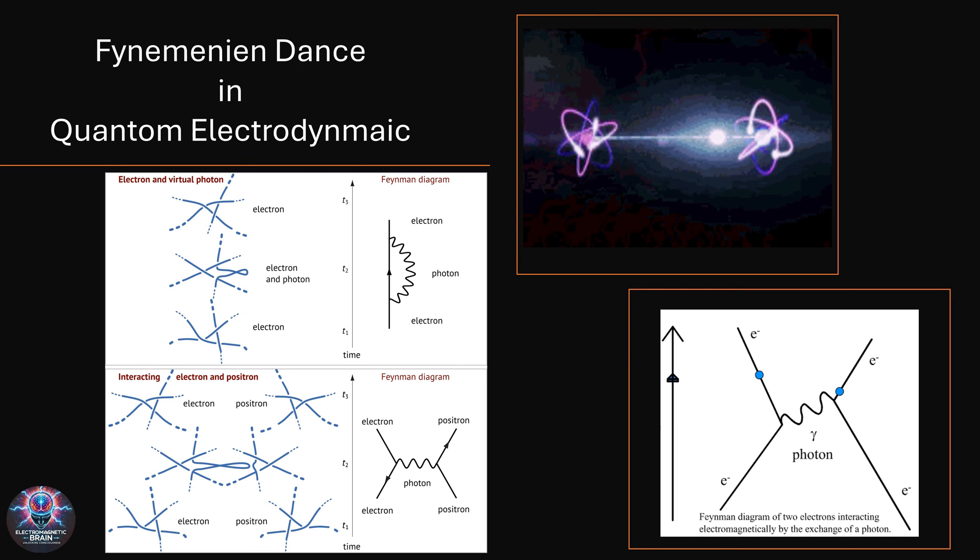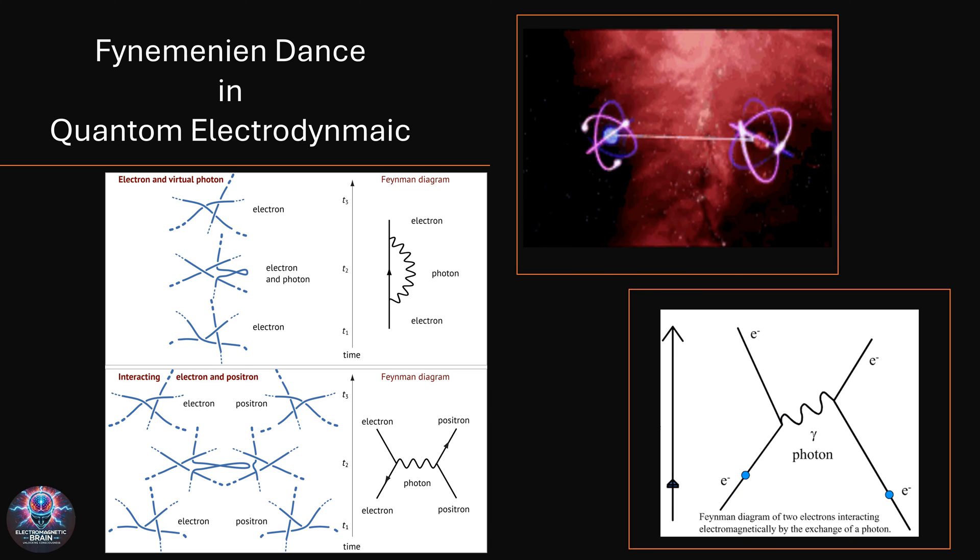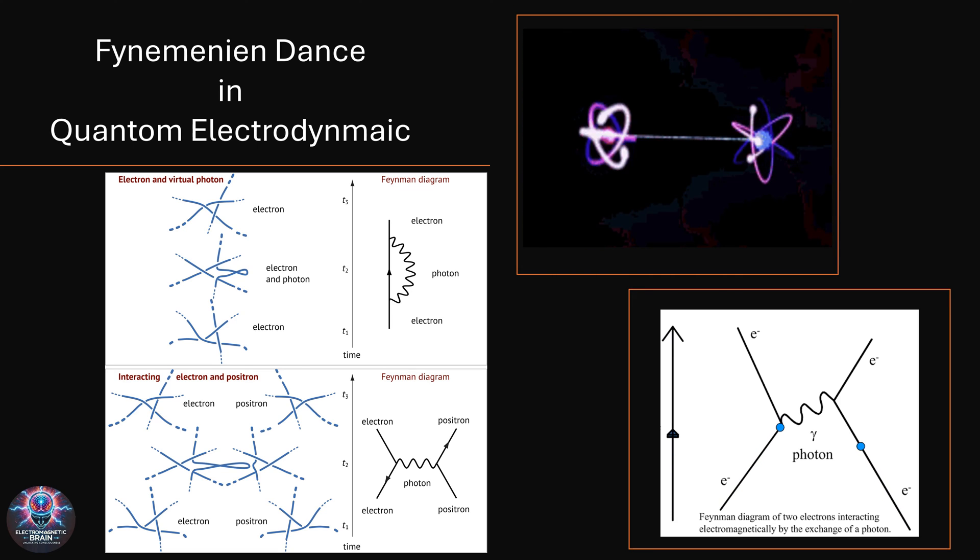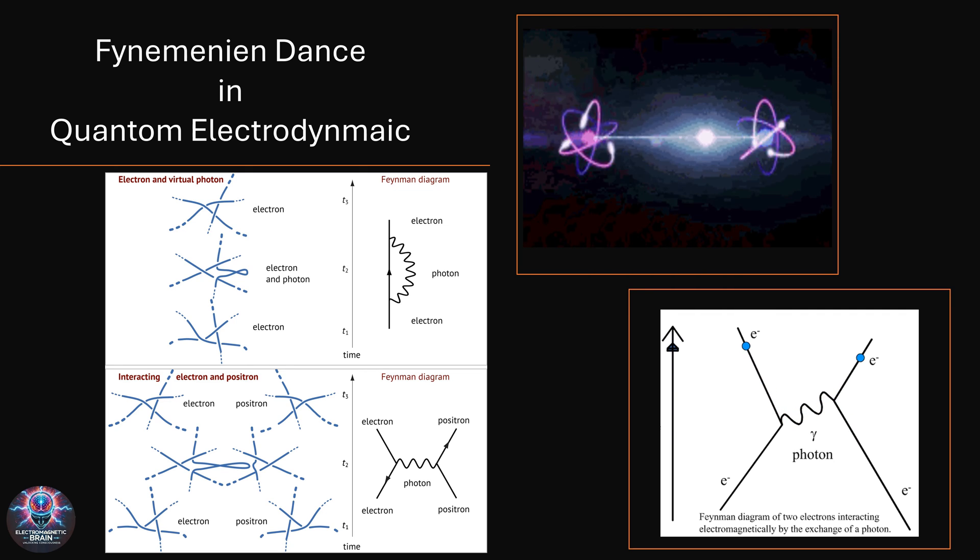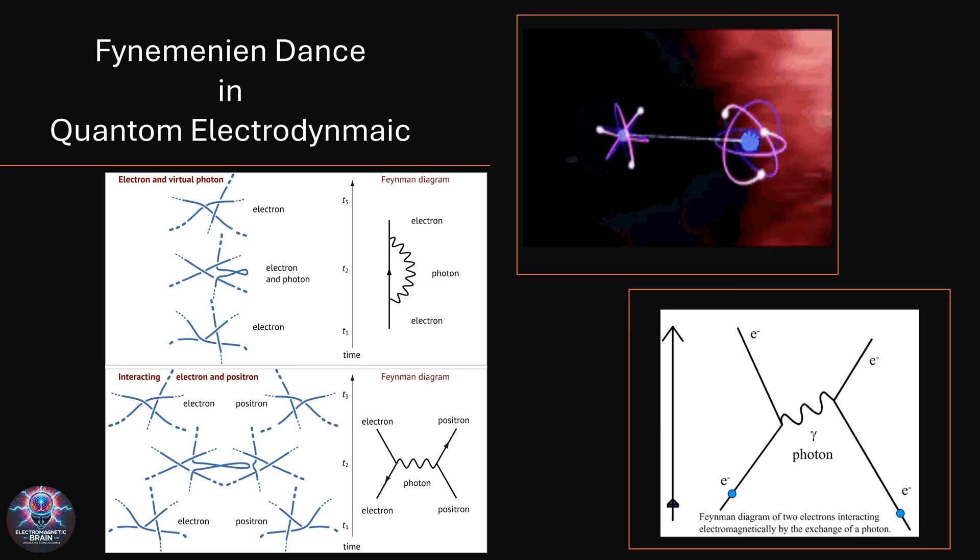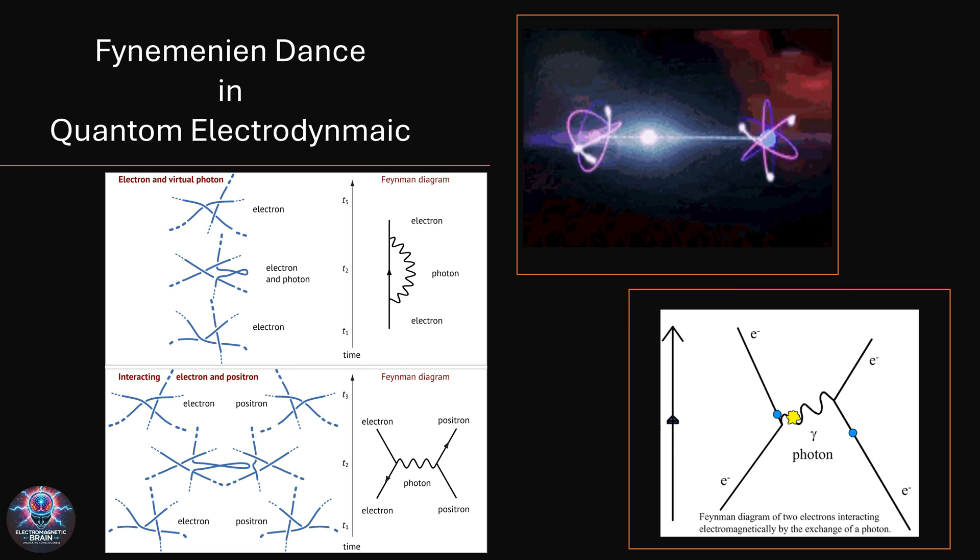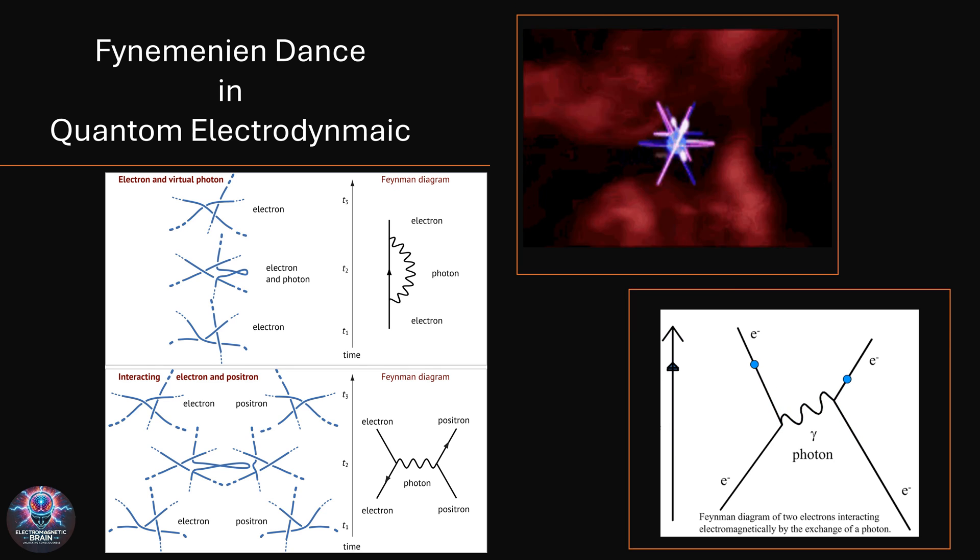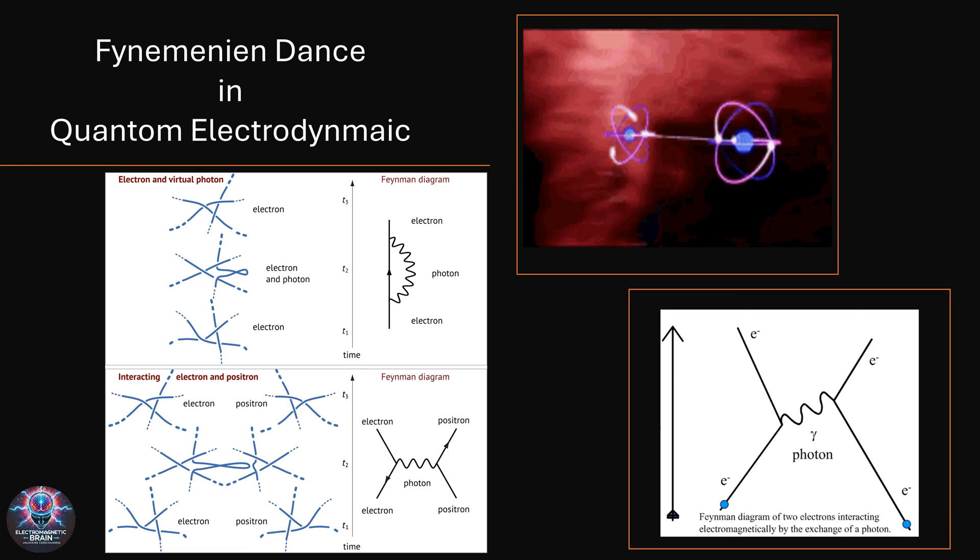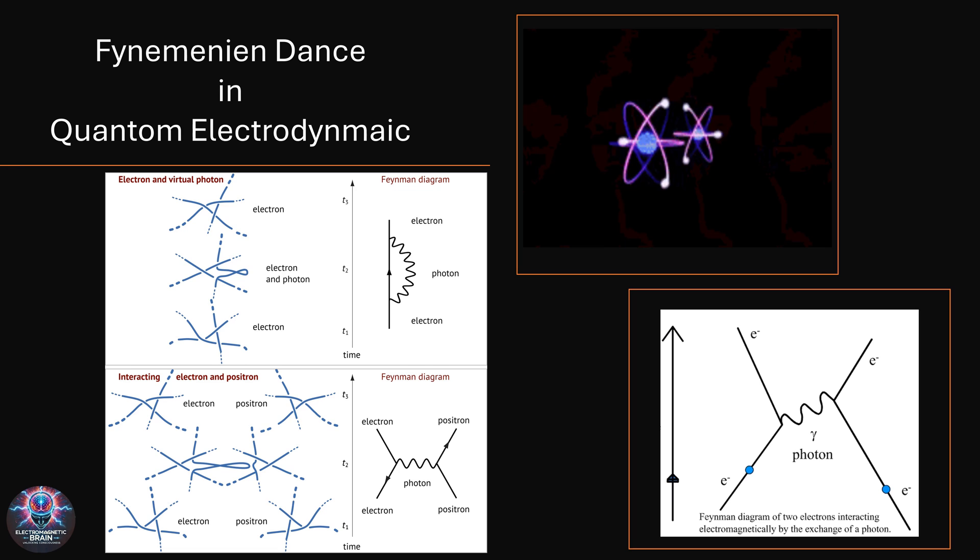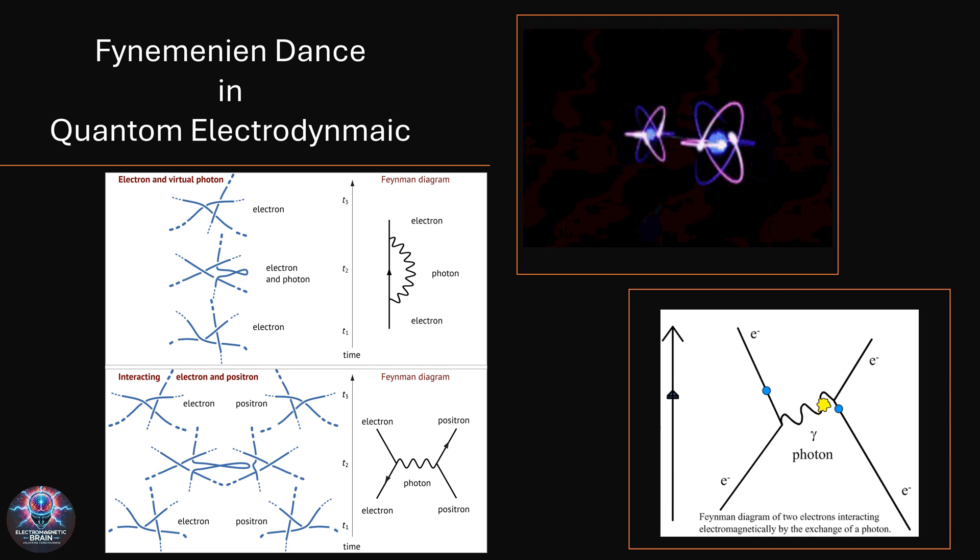As we wrap up our journey into the fascinating world of quantum electrodynamics, let's take one last look at what makes this theory so extraordinary. Right at the center, we see a key feature of QED, the famous Feynman diagrams. These graphical representations, developed by the legendary Richard Feynman, show how electrons and photons interact over time. In the top left, we see an electron emitting and absorbing a virtual photon, a fundamental process in electromagnetic interactions. Below it, we see an electron-positron interaction, where matter and antimatter collide, exchanging photons in a beautiful quantum dance.